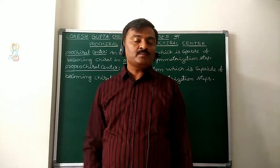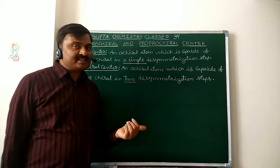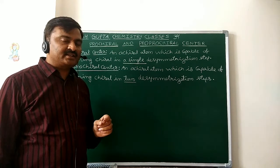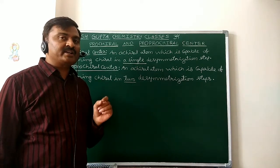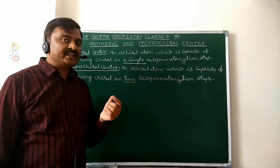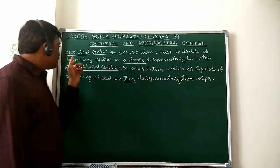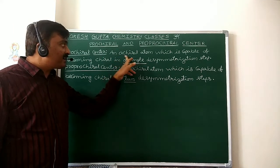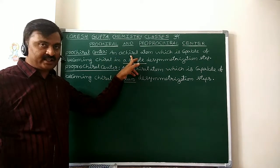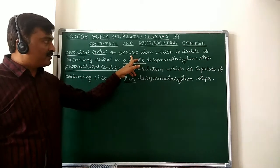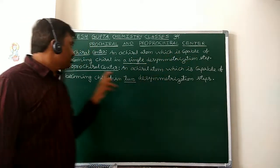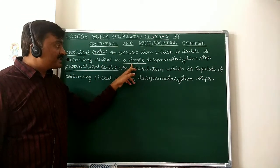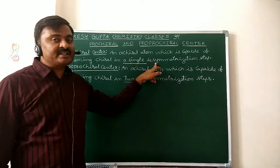What is Pro Chiral Center? In my previous topic I explained the Chiral Center. A Chiral Center is the sp3 hybridized atom which is attached to four different groups. Now, what is Pro Chiral Center? It is an achiral atom — means not chiral — which is capable of becoming chiral in a single desymmetrization step.